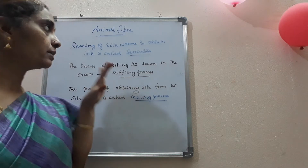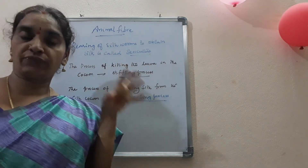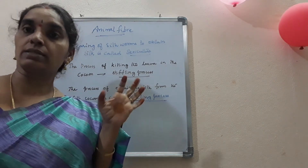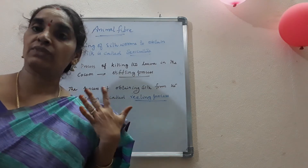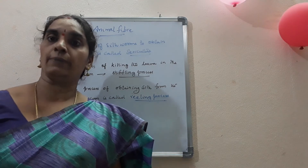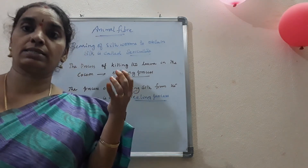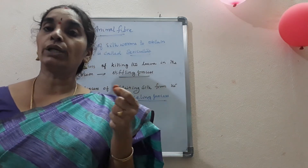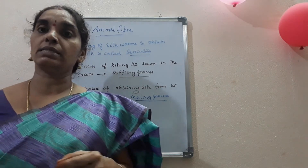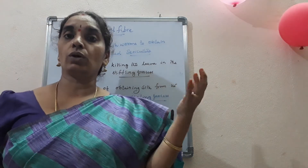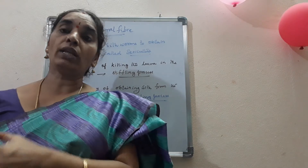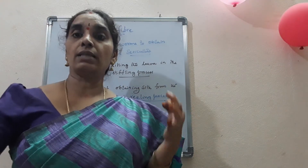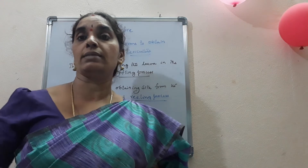In the manufacture of silk, the silkworm weavers generally undergo the stifling process — the process of killing the larva inside the cocoon. In the stifling process, the cocoons are kept in a hot oven for about 15 minutes in order to kill the larva present inside. Later, the cocoons are shifted to boiling water in order to loosen the threads. The process of obtaining silk from the cocoons is called the reeling process.